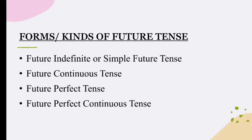There are 4 forms or kinds of Future Tense. They are: Number 1, Future Indefinite or Simple Future Tense. Next is Future Continuous Tense. Number 3 is Future Perfect Tense. And number 4 is Future Perfect Continuous Tense. These are the types of Future Tense. Now let us discuss each of them one by one in detail.